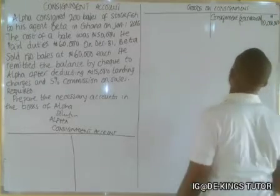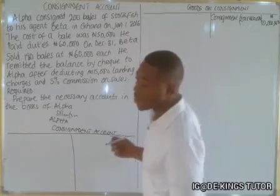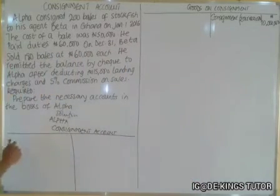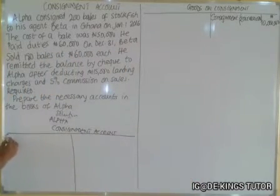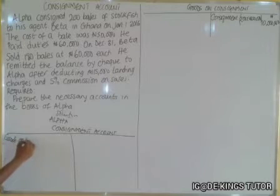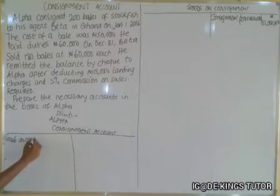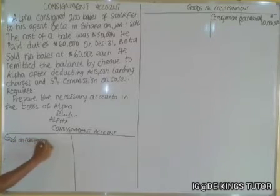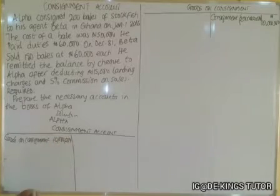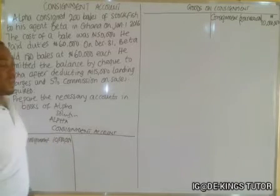So the amount is 10,000,000. The corresponding entry comes on the credit side: goods on consignment, 10,000,000.